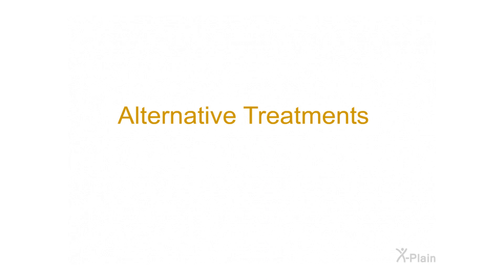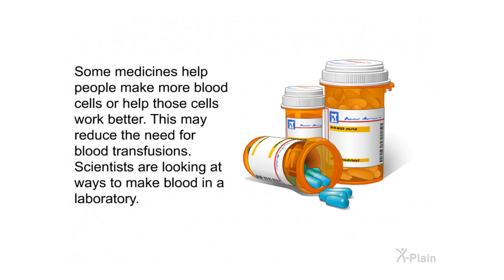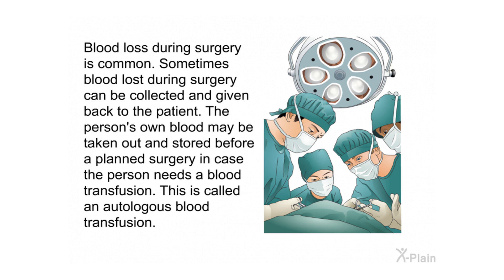Alternative treatments. Some medicines help people make more blood cells or help those cells work better, which may reduce the need for blood transfusions. Scientists are also looking at ways to make blood in a laboratory. Blood loss during surgery is common, and sometimes that blood can be collected and given back to the patient. A person's own blood may also be taken out and stored before a planned surgery in case a blood transfusion is needed — this is called an autologous blood transfusion.